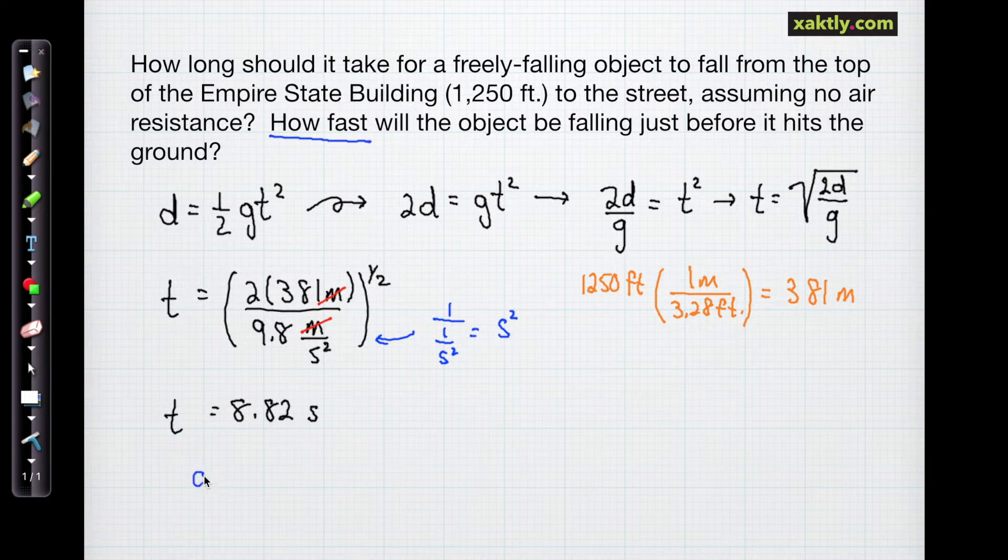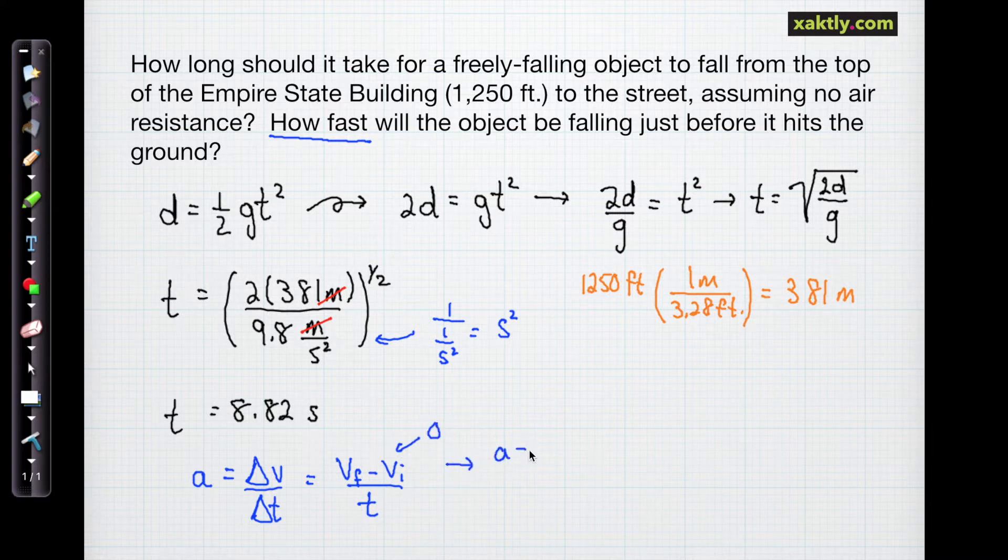The second question is, how fast will this object be falling? Well, we just use the acceleration definition. Acceleration is the change in velocity over the change in time. The change in time is the full 8.82 seconds. The initial velocity, of course, is zero, so that doesn't matter. So we really just have a is equal to v over t, and that v will be the final velocity just before the object hits the ground. So if I solve for that by multiplying t on both sides, I have v equals at.